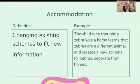Accommodation: changing existing schemas to fit new information. The child who thought a zebra was a horse learns that zebras are different animals and creates a new schema for zebras, separate from the horse.